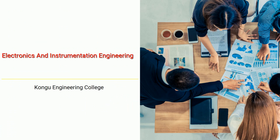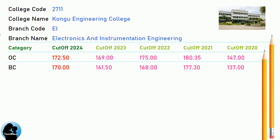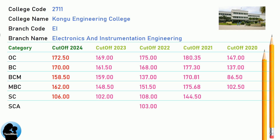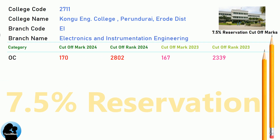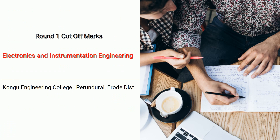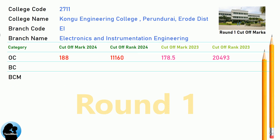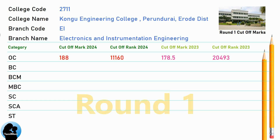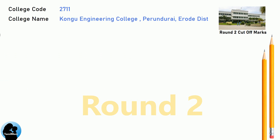DNA cutoff for Kongu Engineering College in Electronics and Instrumentation Engineering. DNA 7.5 reservation cutoff, Round 1 cutoff, and Round 2 cutoff for Kongu Engineering College in Electronics and Instrumentation Engineering.